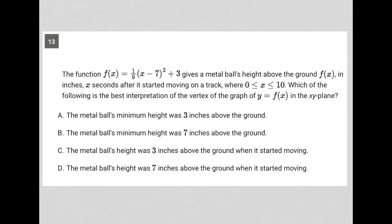So this question says the function f of x equals one ninth times x minus seven to the second power plus three gives a metal ball's height above the ground f of x in inches, x seconds after it started moving on a track where x is between zero and ten. Which of the following is the best interpretation of the vertex of the graph of y equals f of x in the xy plane?